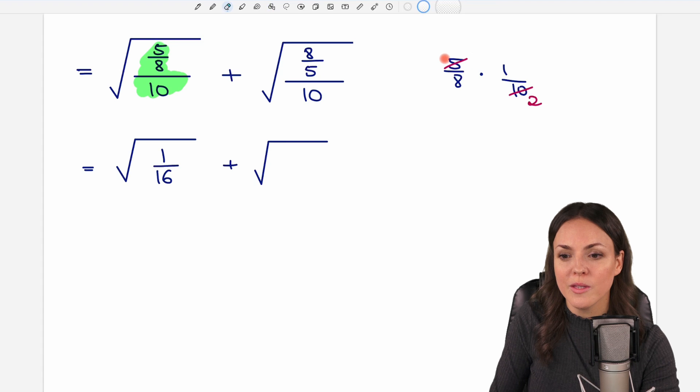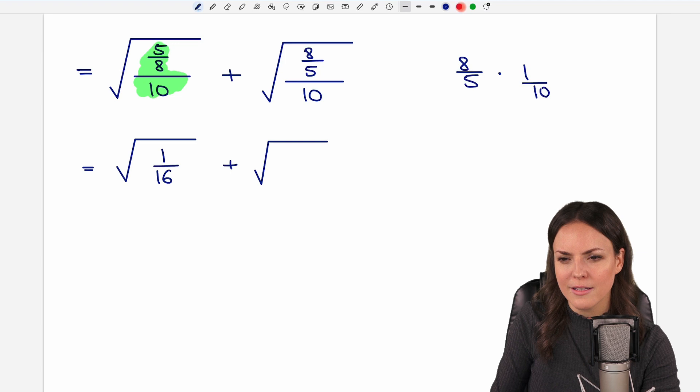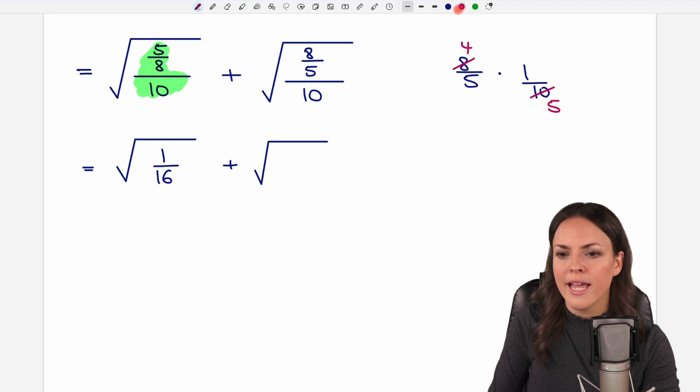The second. We do the same here. We have the 8 over 5 and want to divide this by 10. We write the 10 as a fraction again. Instead of dividing we multiply and switch the numbers, the 1 on top to the bottom, and we can cancel out again because the 8 and the 10 are both divisible by 2. 10 divided by 2 equals 5, 8 divided by 2 equals 4. And now we multiply. We have 4 times 1 equals 4 and 5 times 5 equals 25.